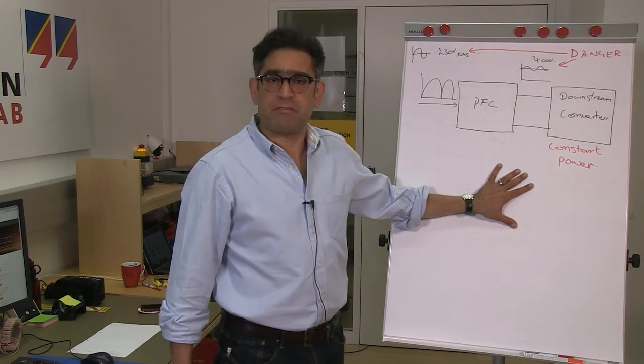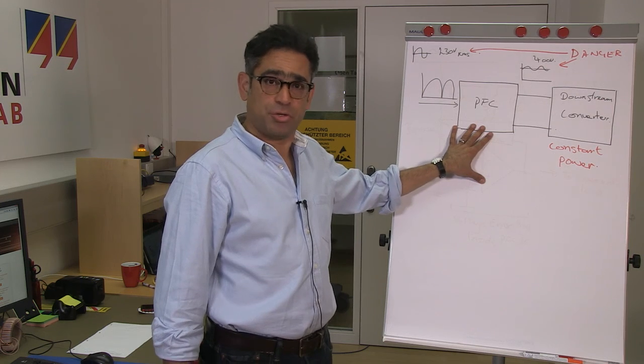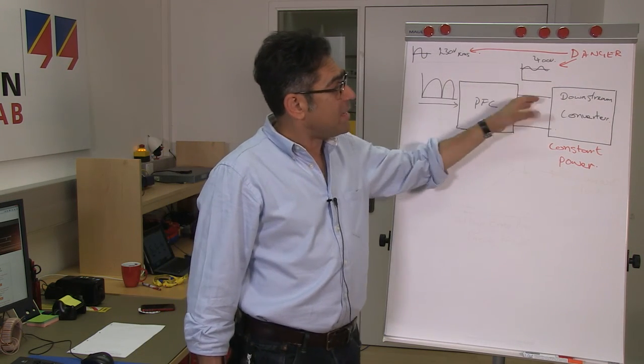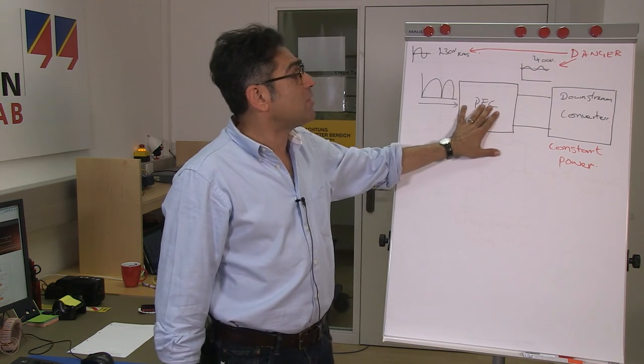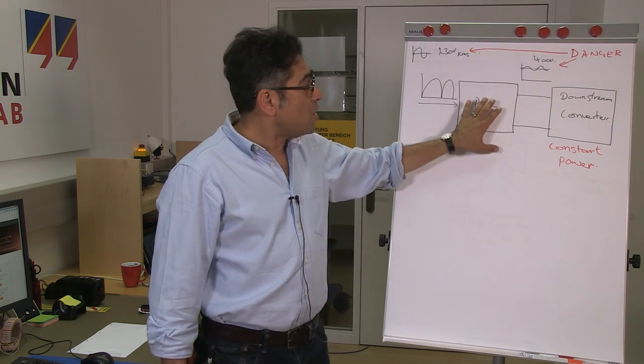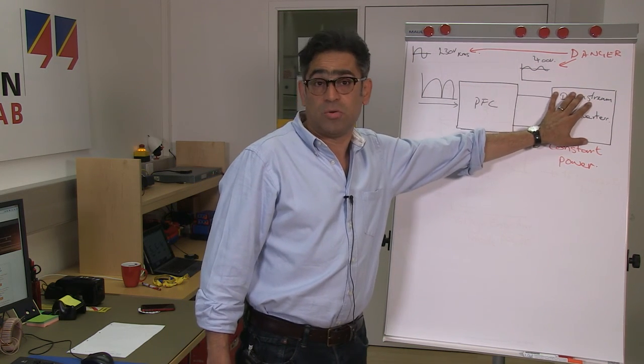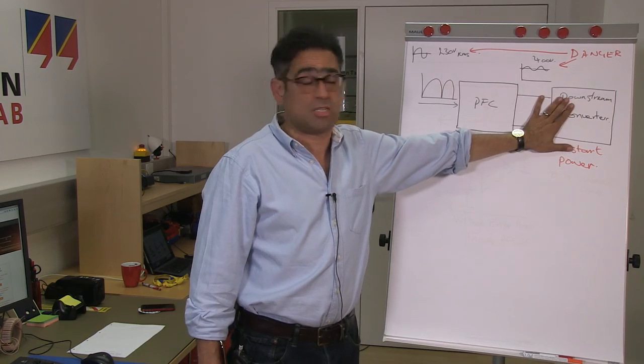Now for many appliances due to regulations we must have a power factor correction unit, that's the PFC, which always feeds a downstream converter or a second stage converter. Please note that when you try to measure the loop you must always make sure that you have got a constant power load, otherwise you will not get the correct result. A purely resistive load may not give you the correct result.